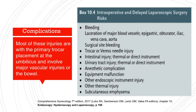Most injuries are secondary to primary trocar placement at the umbilicus and involve major vascular injuries or the bowels. Other complications include bleeding and laceration of major blood vessels including the epigastric, obturator, iliac, vena cava, and aorta, as well as surgical site bleeding. Additional complications include intestinal injury secondary to trocar placement or thermal injury, urinary tract injury, anesthetic complications, equipment malfunction, laparoendoscopic instrument injury, other thermal injuries, and subcutaneous emphysema.